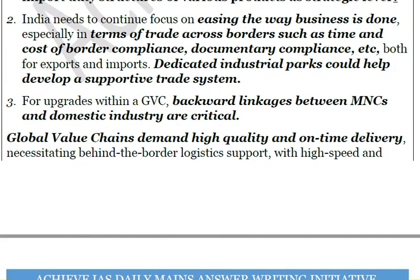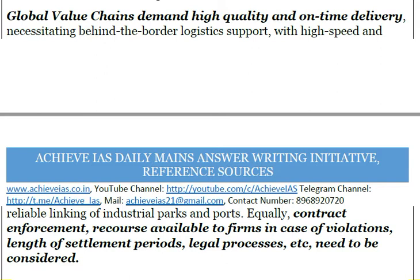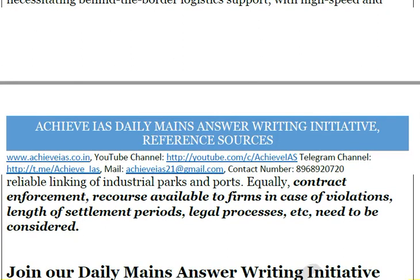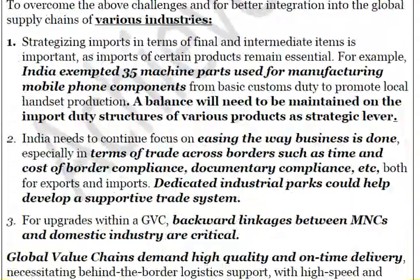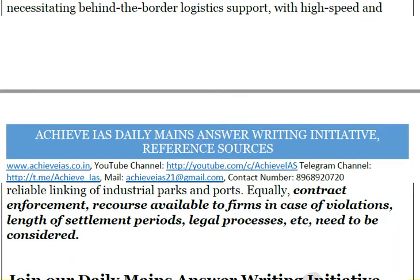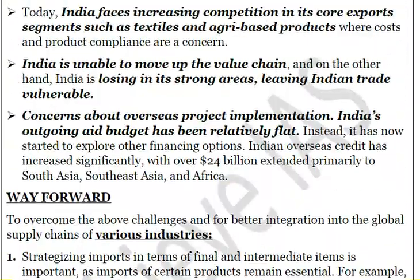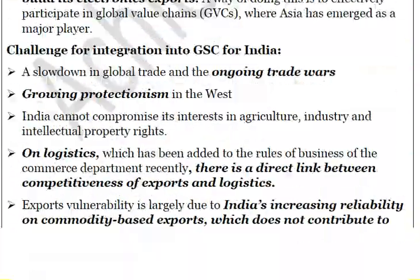Focus must be on high quality and timely delivery, which includes reducing time and compliance issues, improving the logistics sector, and ensuring high-speed reliable linking of industrial parks and ports. Contract enforcement is also necessary — recourse available in case of violations, length of settlement periods, and legal processes all need to be considered. Dedicated industrial parks could help develop a supportive trade ecosystem. Backward linkages with MNCs are critical, and domestic industry must provide valuable input so India can gain from both backward and forward linkages.